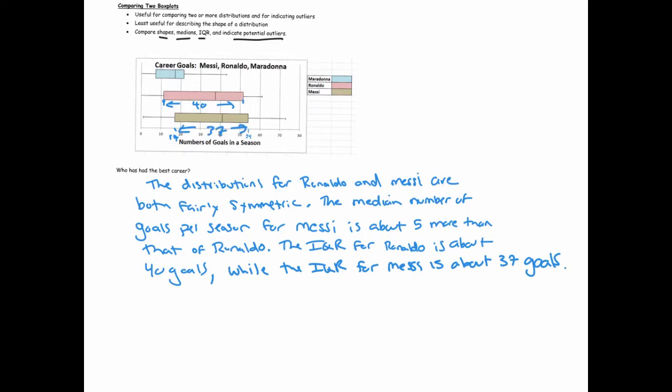The ranges, we might as well talk about the ranges too, because that's kind of important. It kind of indicates the best and the worst season for both. So Ronaldo's range, his, you know, the best season he's had so far is at about 61 goals, and he had a season with zero goals. So Ronaldo's range is 61 goals.